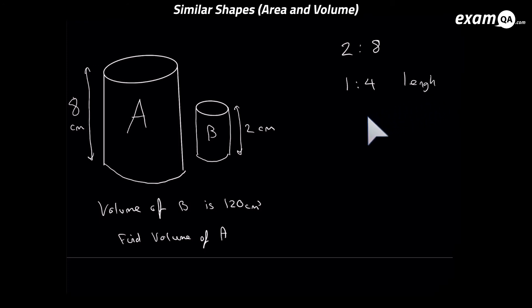So we can get the volume ratio. We just need to cube it as before. So cubing the 1 you get 1, and cubing the 4 you get 64. This is our volume ratio.